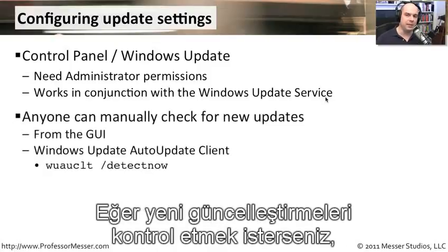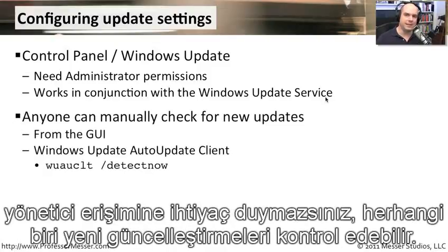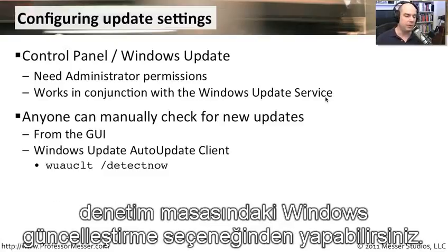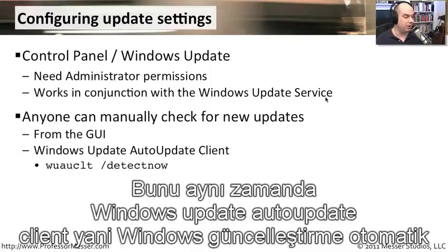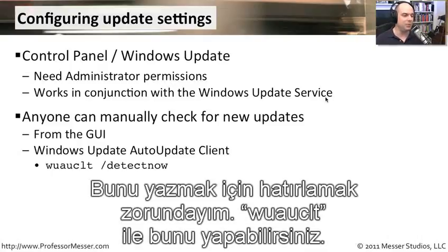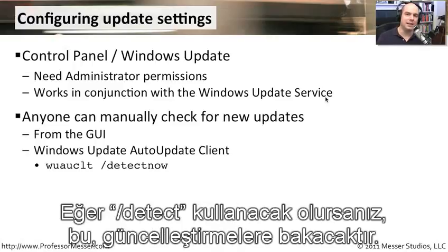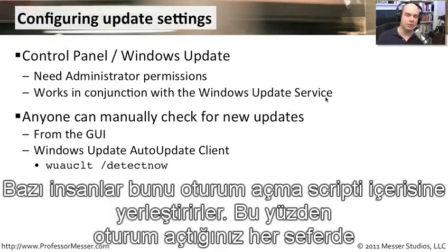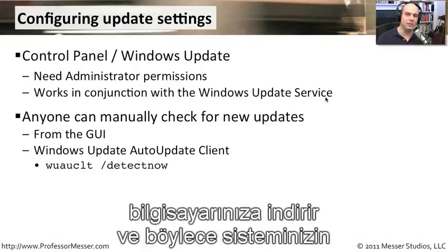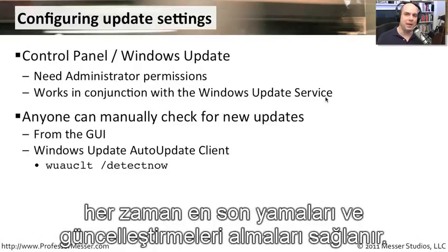If you want to check for new updates, you don't need administrator access — anybody can check for new updates. You can do that from the GUI inside Control Panel and Windows Update. You can also use the Windows Update Auto Update Client, WUAUCLT, with the /detectnow switch. Some people put that in a login script so every time you log on it checks for new updates and downloads them to keep your system at the latest set of patches.